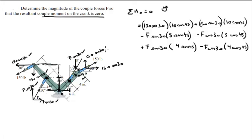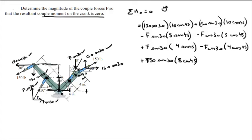The last two forces: this one creates a counterclockwise moment so it's positive — 150 sine of 30 times the length of the lever arm from the X to this one, which is 8 cosine of 45. And the last one is negative because it creates a clockwise moment: 150 cosine of 30 times 8 sine of 45, because this is the lever arm that goes from here all the way to the X.